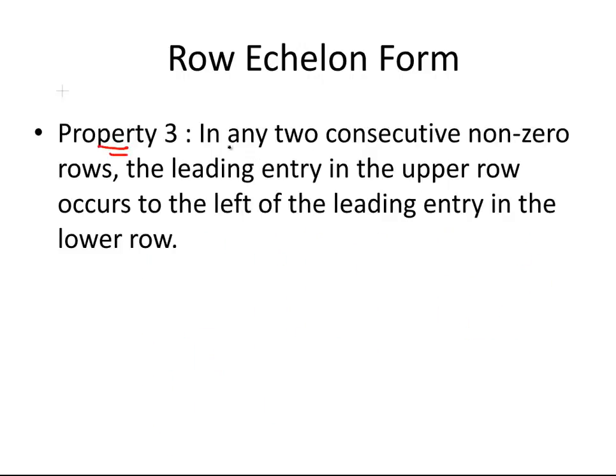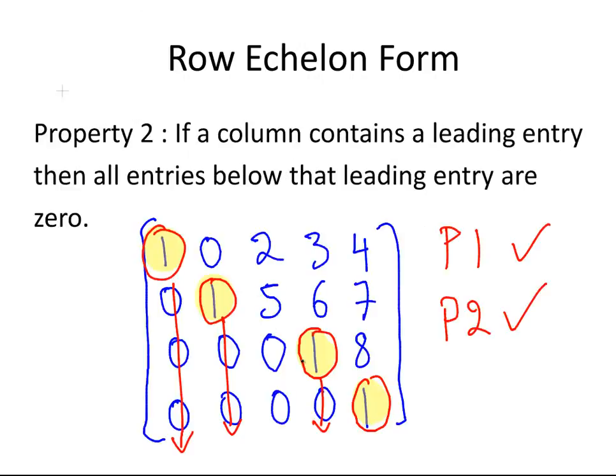Property 3: In any two consecutive non-zero rows, the leading entry in the upper row occurs to the left of the leading entry in the lower row. Let's go back to our example here. Starting from the bottom, the row just above that, the leading entry is to the left of that one. The next row up, the leading entry is to the left of that. And here, the leading entry is to the left of the one below that. So this conforms to property 3 as well.